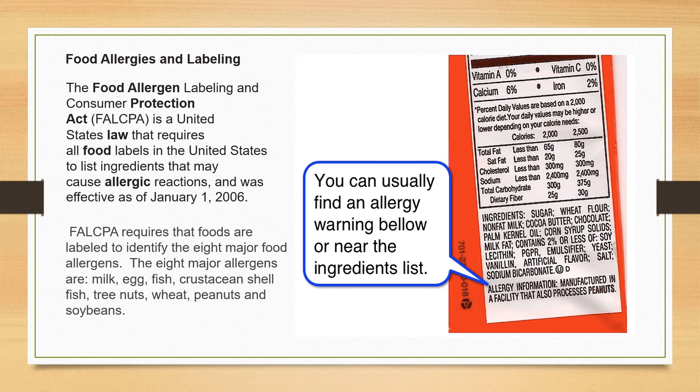Food allergies can be so dangerous and life-threatening that Congress enacted FALPA, the Food Allergen Labeling and Consumer Protection Act, effective January 1, 2006. This requires that any food that comes from the eight major food allergen groups must be stated on the label. You can usually find this warning below or near the ingredient list.